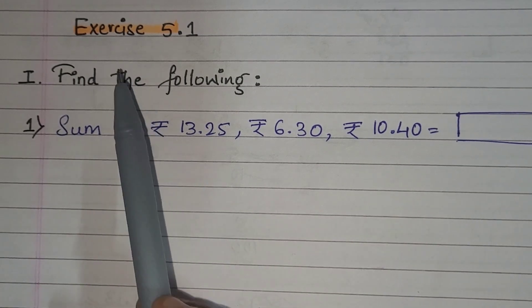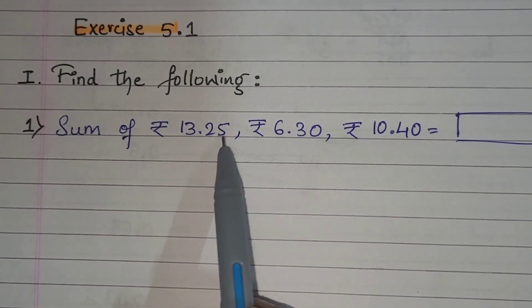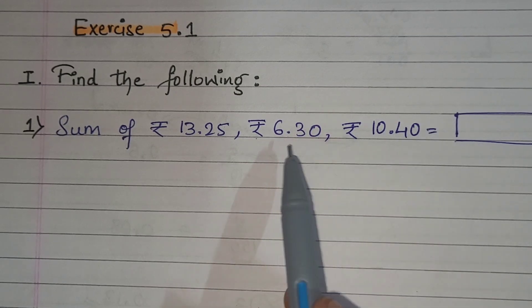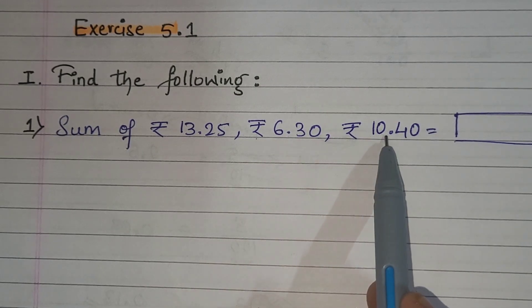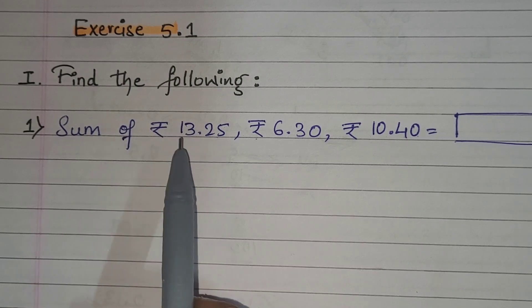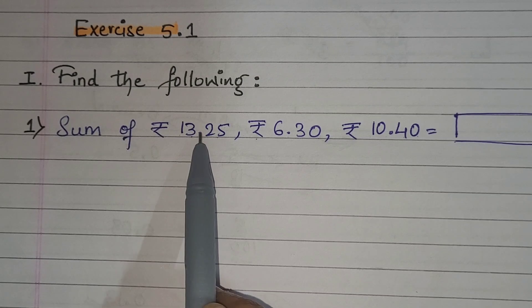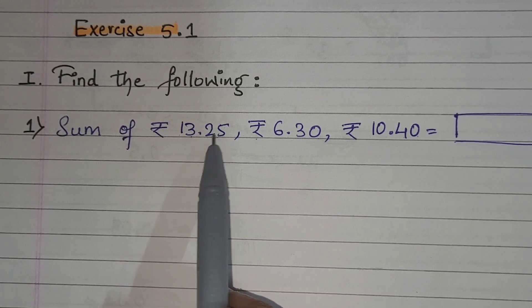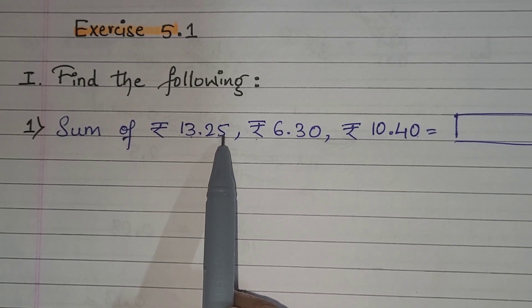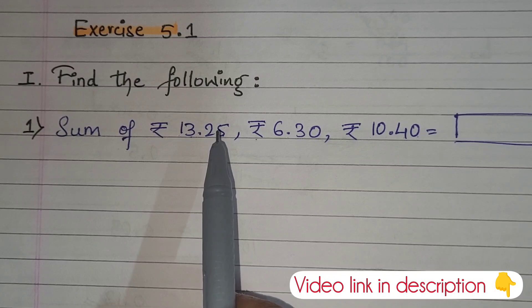Here I have written the same example: sum of rupees 13.25, rupees 6.30, rupee 10.40. If you see 13.25, the 13 is rupees and after the decimal point the numbers are paise — that is what we solved in the previous lesson on decimal fractions. I will put that video link in my description box, just go and check it out.